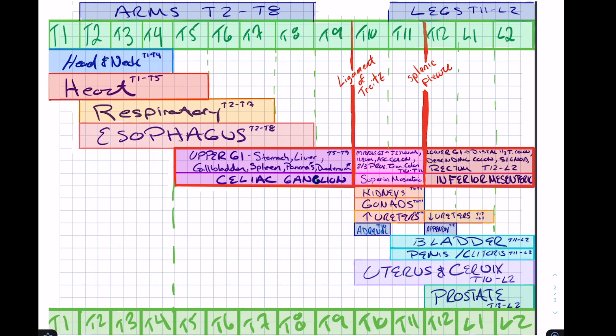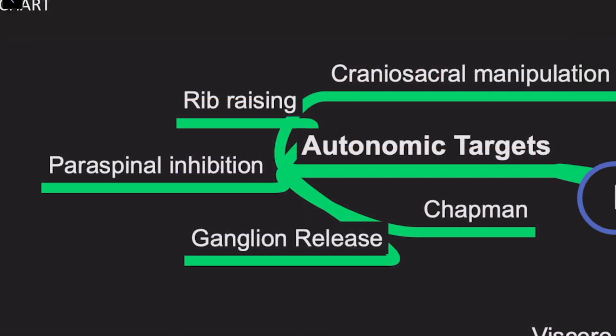Here's a view of the full chart. If you know this chart, you should get a lot of questions correct. You can also generally target the autonomic system and treat it in many different disease states. It is thought that many disease states may produce changes in the autonomic system, making things hypersympathetic. Some targets for osteopathic manipulation are rib raising, craniosacral manipulation, Chapman point targeting, ganglion release, and paraspinal inhibition — all areas that target the autonomic system.